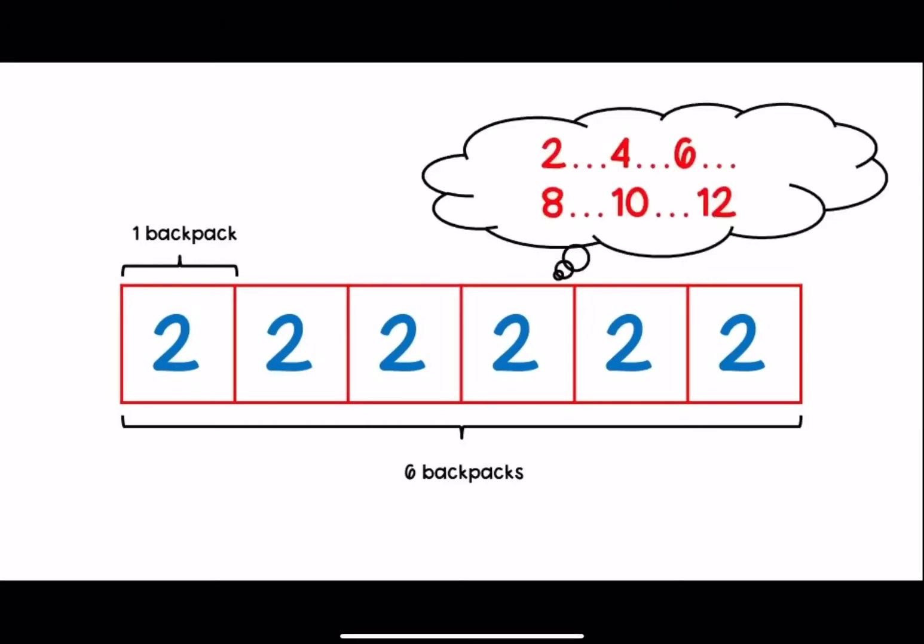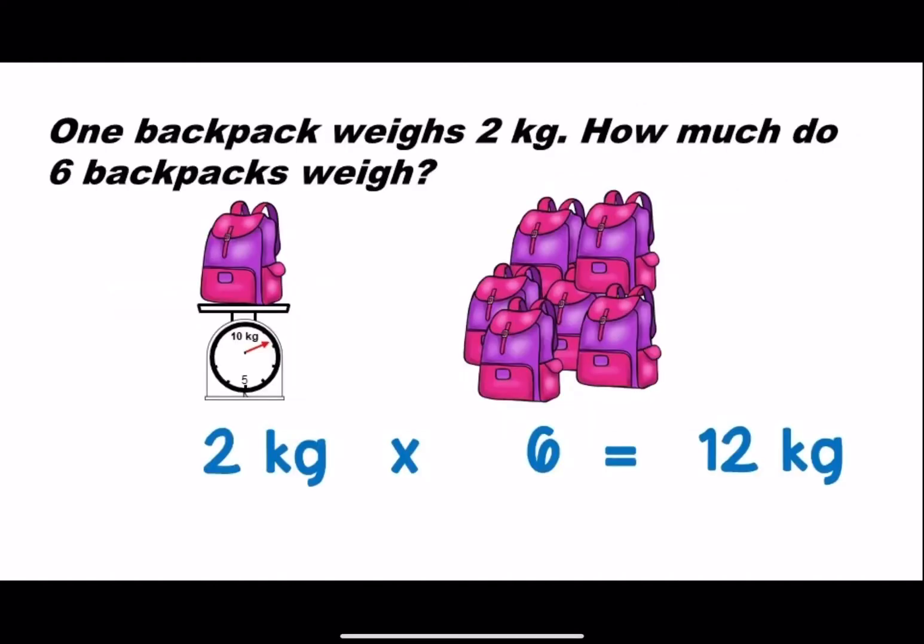Let's count by twos. 2, 4, 6, 8, 10, 12. Two kilograms times six equals 12 kilograms. We can say that six backpacks weigh 12 kilograms.